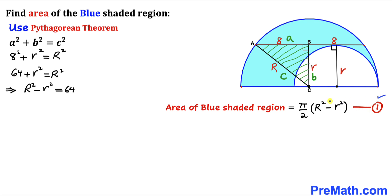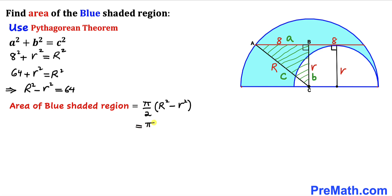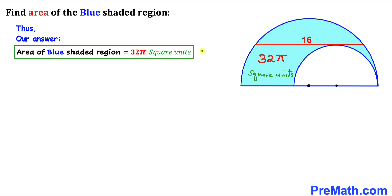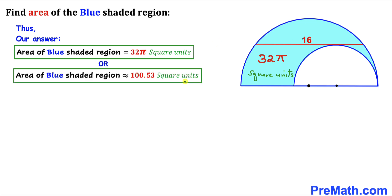Rearranging, we get uppercase R squared minus lowercase r squared equals 64. Returning to equation one, we replace R² − r² with 64, giving us π/2 times 64, which simplifies to 32π. Since π is approximately 3.14, the area of this blue shaded region is approximately 100.53 square units. So the area of the blue shaded region is 32π square units, which is approximately 100.53 square units.